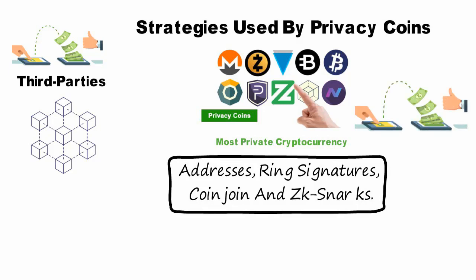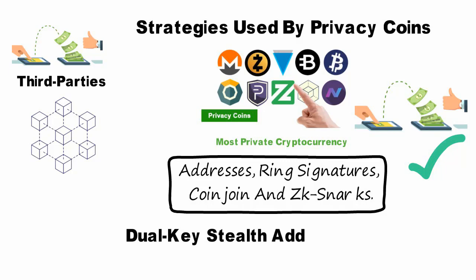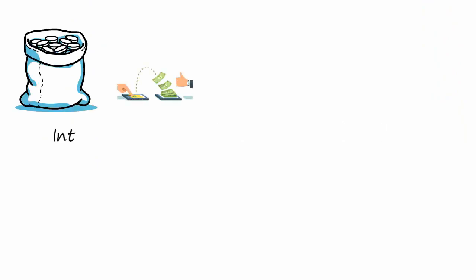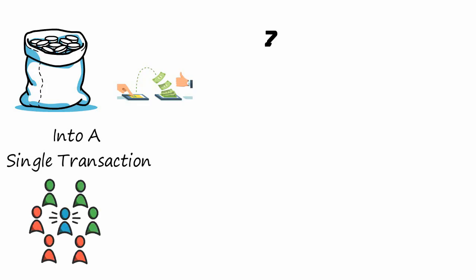Monero (XMR), one of the top privacy coins, uses a version of stealth addresses called the Dual Key Stealth Address Protocol (DKSAP). Coin join is known as a coin mixer that merges transactions from various individuals into a single transaction and then disperses them to their respective users using new addresses.